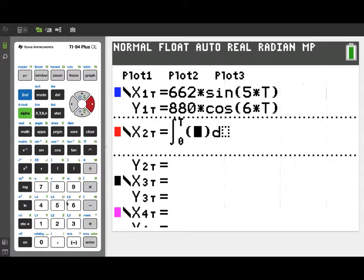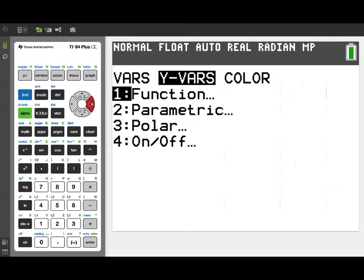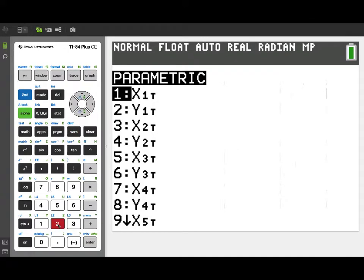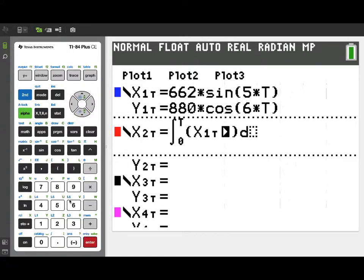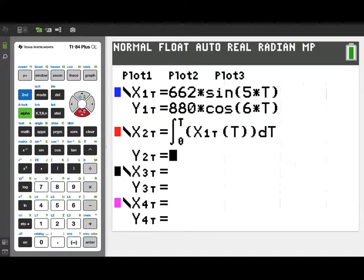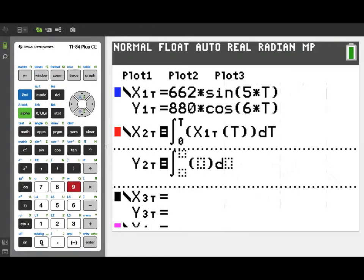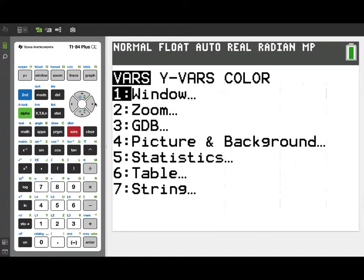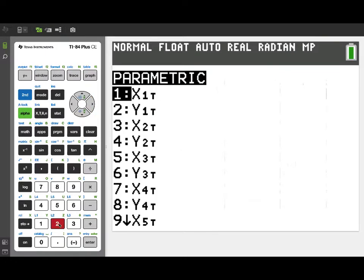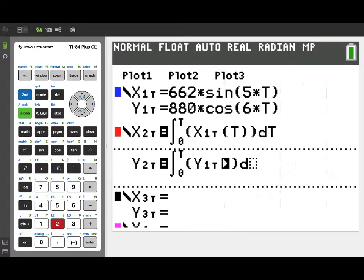For X2t, we'll integrate from 0 to t of our velocity, X1t, retrieving that from the Y variables menu. And then we'll integrate with respect to t. Now, this will give us a position function for the X component of our position. And now for the Y, we'll do the same thing. Again, we'll get a definite integral function from 0 to t. Now we're doing the Y velocity. So we will retrieve Y1t from our Y variables menu from the parametric. There we go. And we'll integrate that with respect to t.